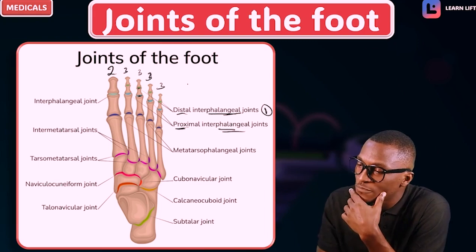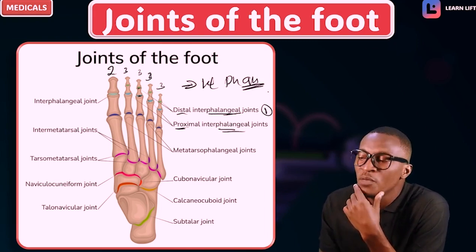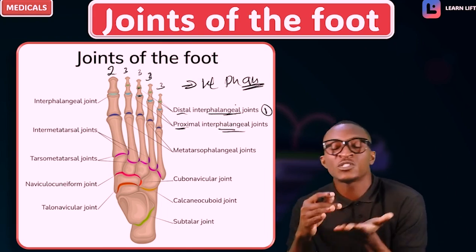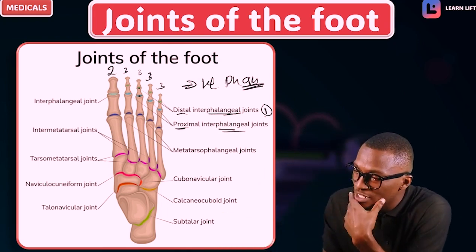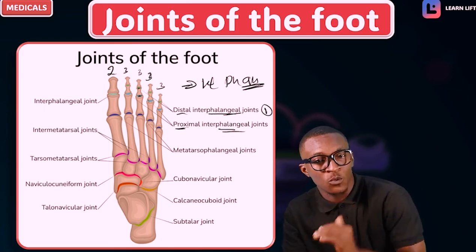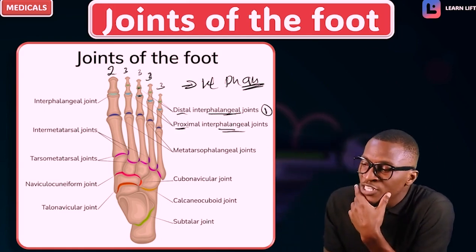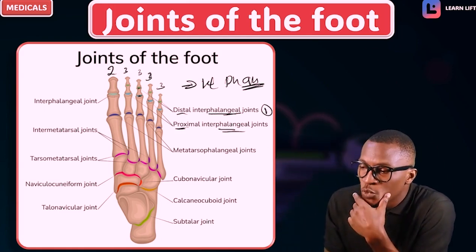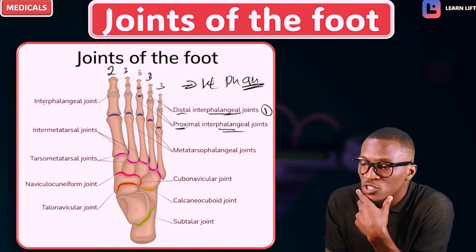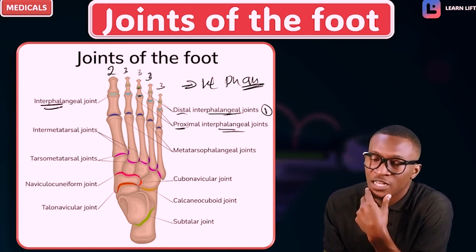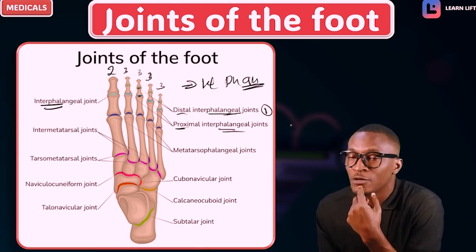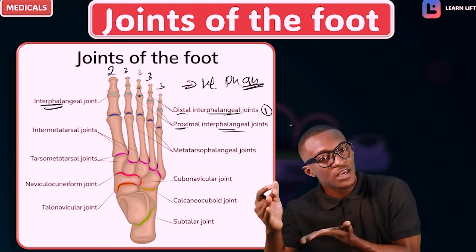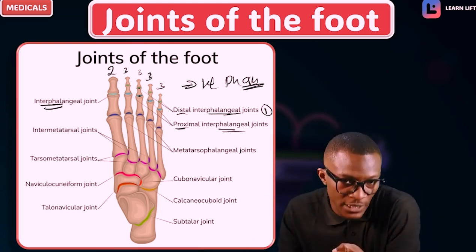Remember that we have 14 phalanges. In between the phalanges, those joints are called the interphalangeal joints. But in the big toe, we have only one joint because it's just two bones — so it is called the interphalangeal joint. But in the other digits, we have the distal interphalangeal joint and the proximal interphalangeal joint, because they are three bones — if there are three bones, there are going to be two joints.